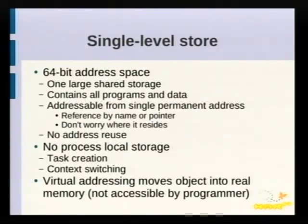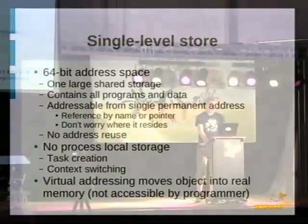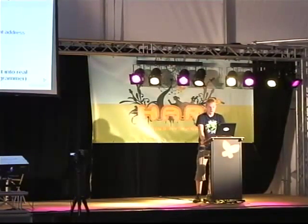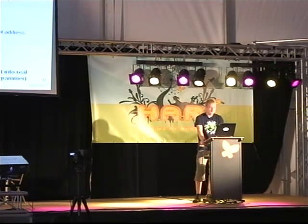Another special feature of the system is the single-level store, which Frank Saltis researched in his PhD and implemented in the System/38. The AS/400 inherited this: it has one large 46-bit address space that contains everything, and addresses are never reused. There is no process-local storage like in Unix, which speeds up task creation and context switching. The programmer does not have access to real memory — virtual addressing ensures objects are moved into real memory transparently.